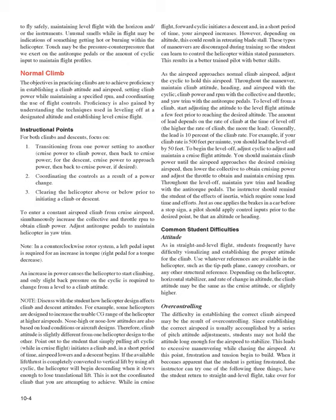For example, if your climb rate is 500 feet per minute, you should lead the level off by 50 feet. To begin the level off, adjust the cyclic to maintain a cruise flight attitude. Maintain climb power until the airspeed approaches the desired cruising airspeed, then lower the collective to obtain cruising power and adjust the throttle to obtain and maintain cruising RPM. Throughout the level off, maintain yaw trim and heading with the anti-torque pedals. The instructor should remind the student of the effects of inertia, which require some lead time — just as one applies the brakes in a car before a stop sign, a pilot should apply control inputs prior to the desired point.